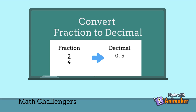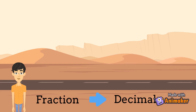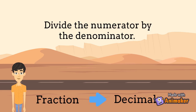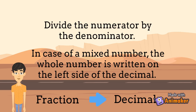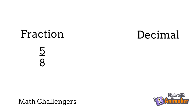Convert a fraction to a decimal number. To convert a fraction to a decimal, divide the numerator by the denominator. In the case of a mixed number, the whole number is written on the left side of the decimal. For example, to change 5 eighths to a decimal, we have to divide 5 by 8.